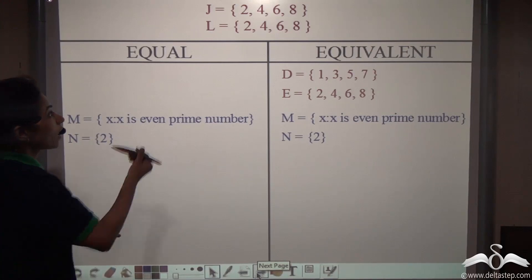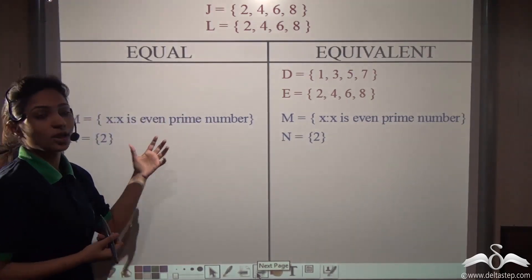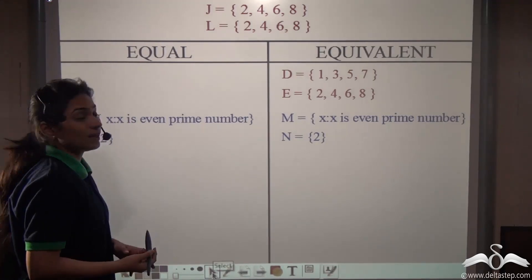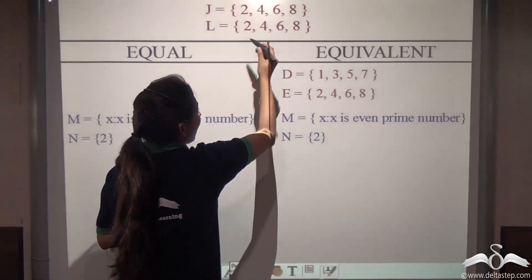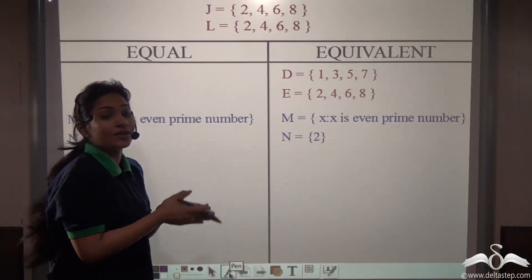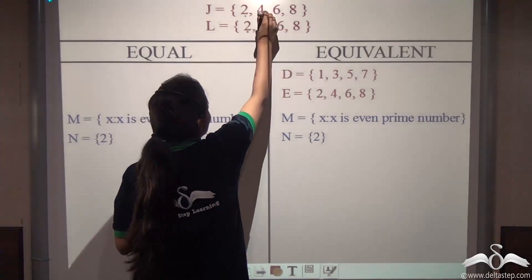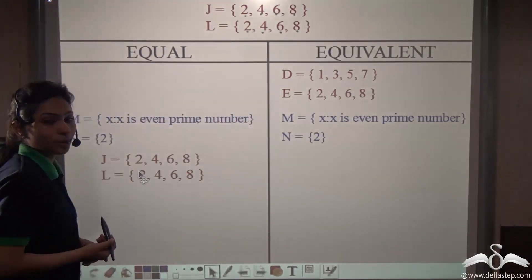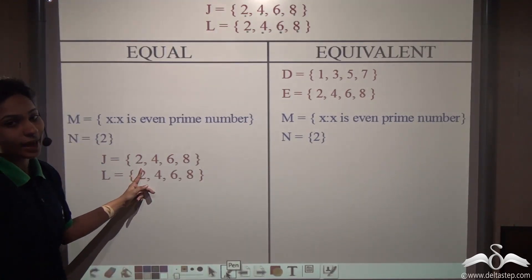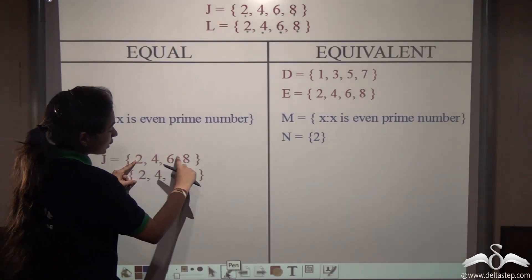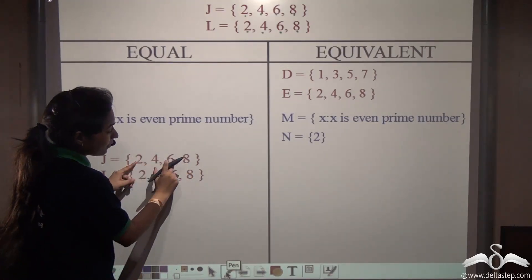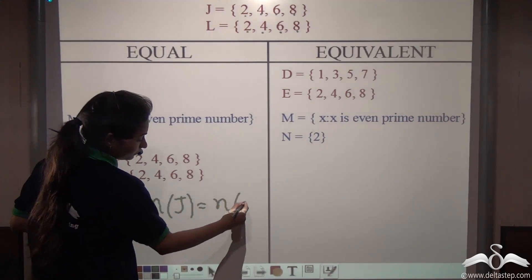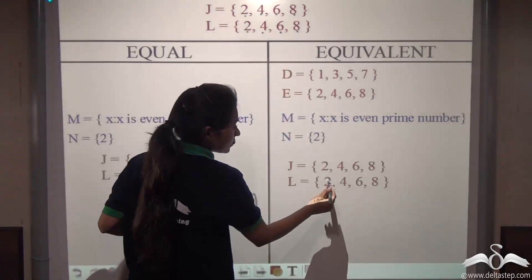One more example: set J and set L. Are they equal or equivalent? Both have exactly the same elements in the same order — 2, 4, 6, 8. So they are equal sets. What about being equivalent? If two sets are equal, they must also be equivalent, because having the same elements means having the same number of elements. So N(J) equals N(L). These sets are equivalent as well.